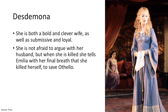The third important character is Desdemona. She's both a very bold and clever wife. However, in line with Elizabethan standards, she also fits the role of the perfect Elizabethan wife — very submissive and very loyal. Even after Othello strangles her to death, with her last dying breath she defends him to Emilia, who is Iago's wife. She's not afraid to argue with her husband, but as mentioned, when she's killed she still tries to save Othello.